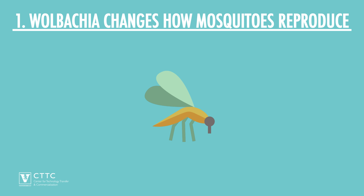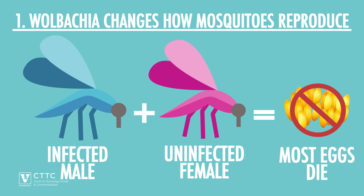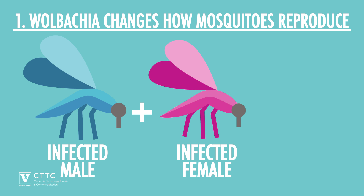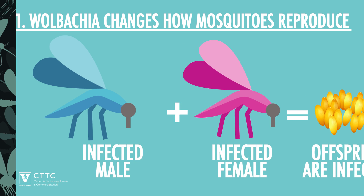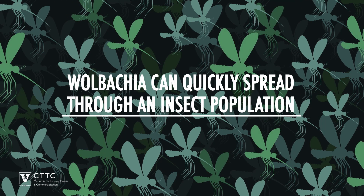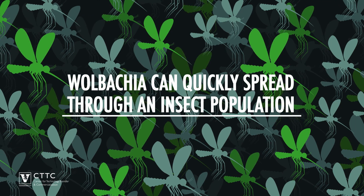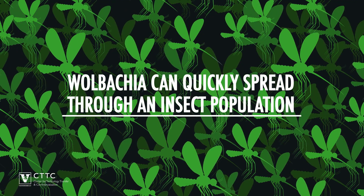One, it changes how they reproduce. If Wolbachia-infected males mate with uninfected females, most of the eggs die. But when the male and female are both infected, the eggs live and the offspring carry Wolbachia. So within a few generations, this overachieving bacterium can spread throughout an entire insect population.